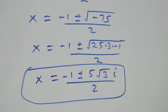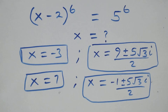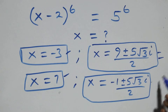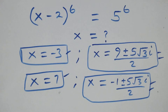Therefore, all together in this problem we have six solutions: two real solutions (x = -3 and x = 7), two complex solutions from the first case, and two complex solutions from the second case. Thank you for watching. Don't forget to subscribe for more videos, turn the notification bell on, share this video, give a thumbs up, and put your comments. See you in the next lesson, bye for now.